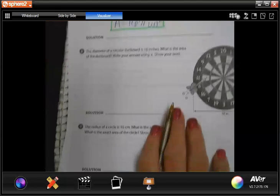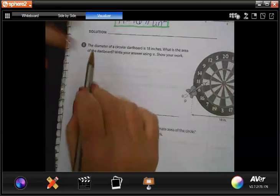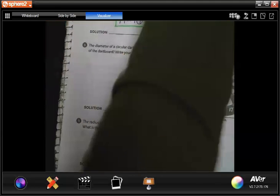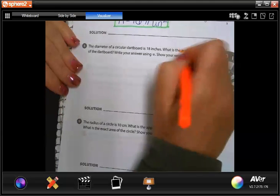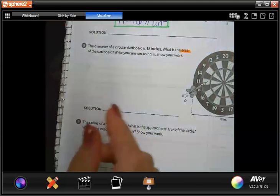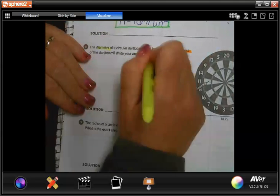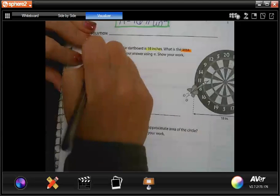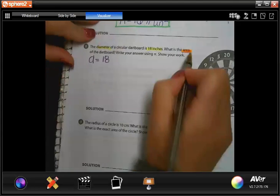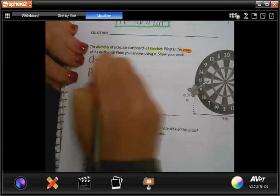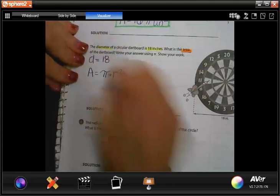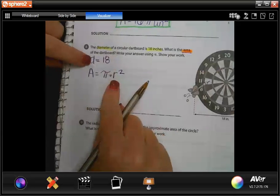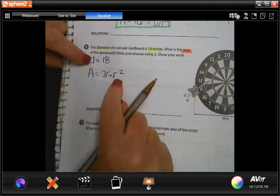Let's take a look at number eight. The diameter of a circular dartboard is 18 inches. What is the area of the dartboard? Well, here's what we know. We know that our diameter of the dartboard is 18. We know we're looking for area. So area is pi times radius squared. Well, here's our first problem. They give us the diameter, but we need to know the radius for our formula.